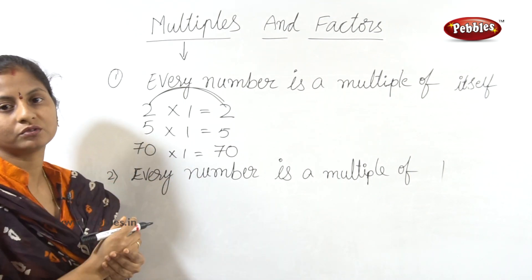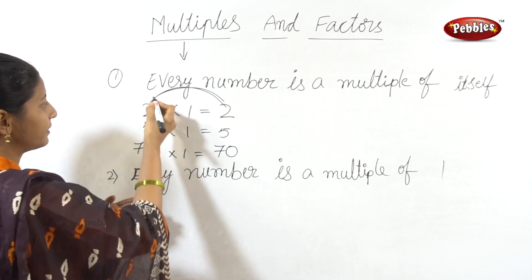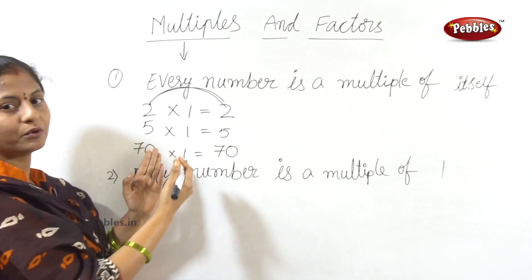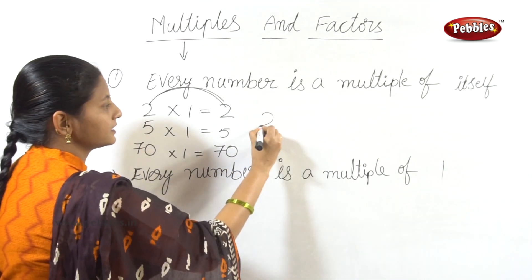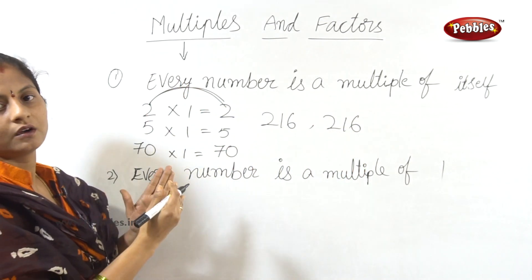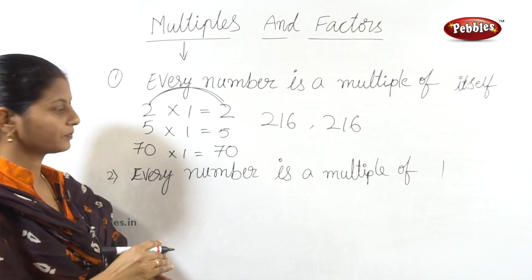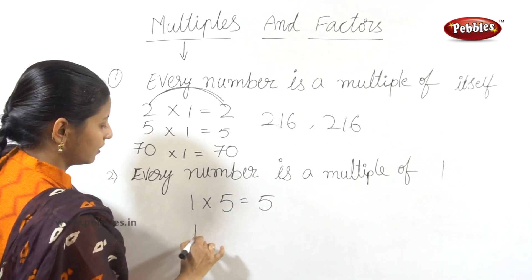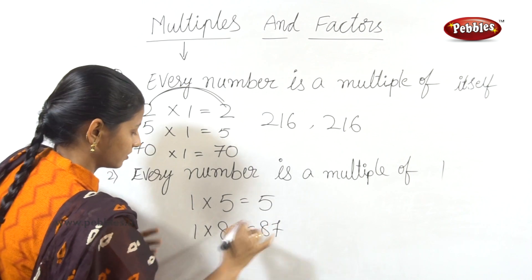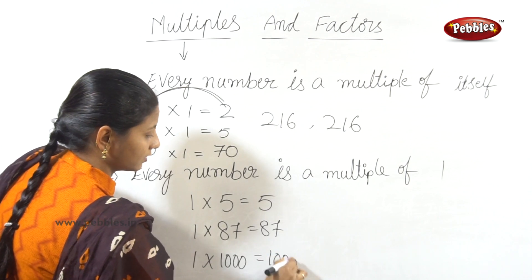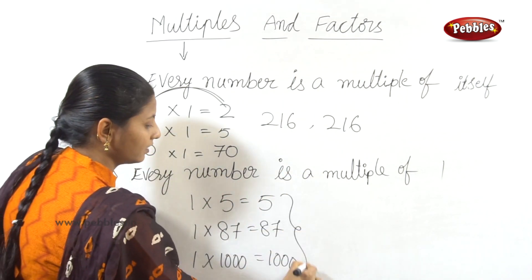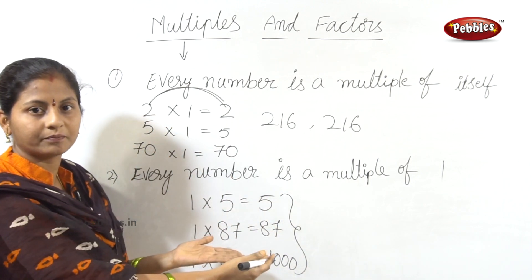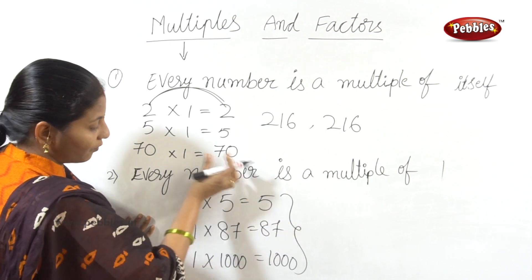Every number is a multiple of itself. Also, every number is a multiple of 1. In the one times table: 1 times 5 is 5, 1 times 87 is 87, 1 times 1000 is 1000. So every number is compulsorily a multiple of 1.